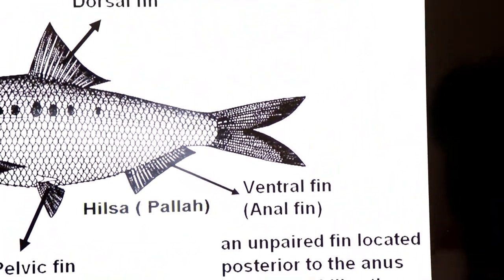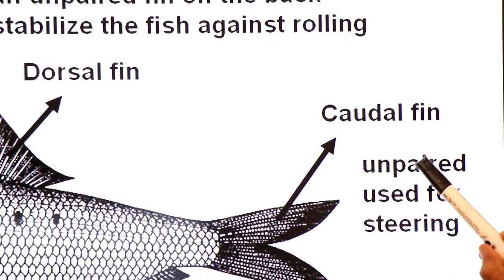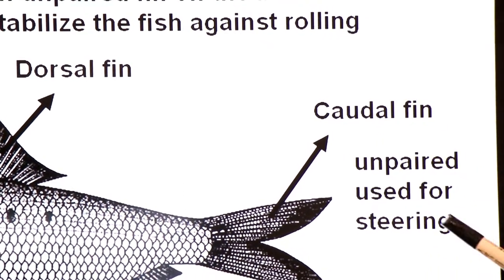Or the fin found in the tail is called caudal fin. Caudal fin, unpaired fin, used for steering.